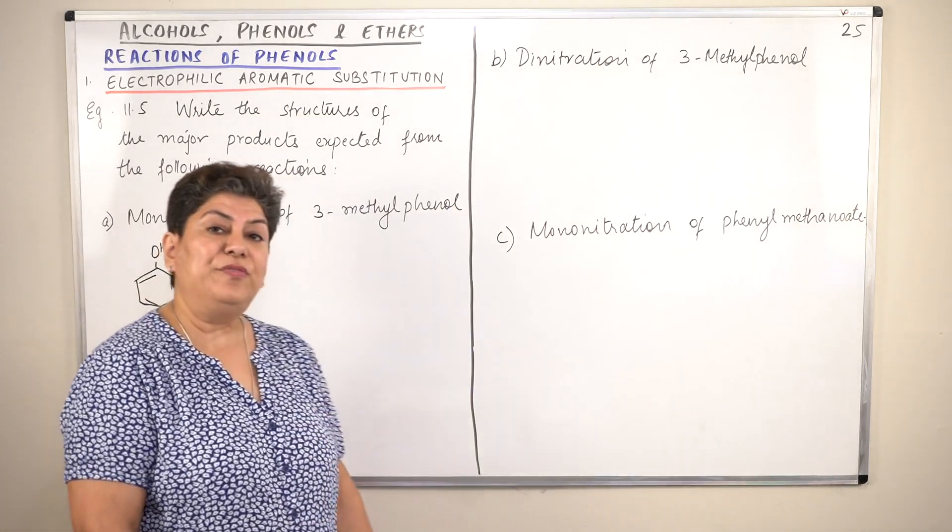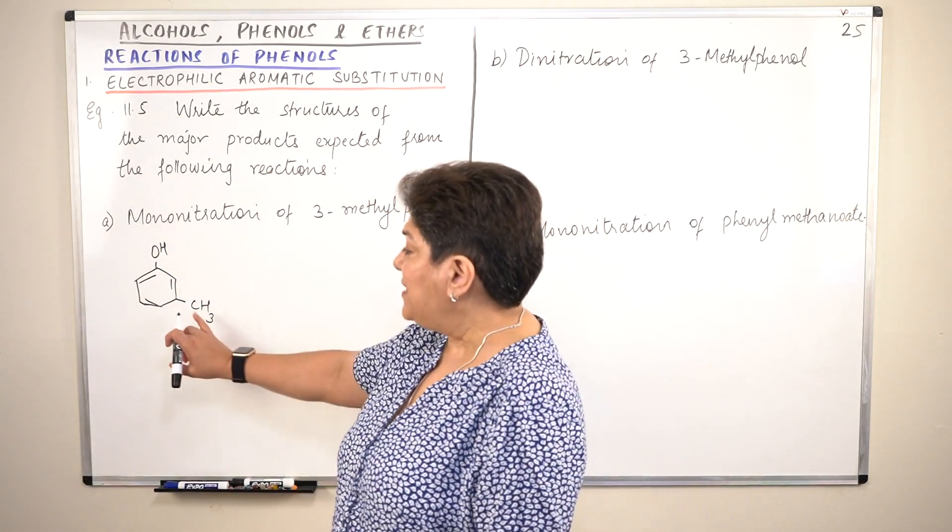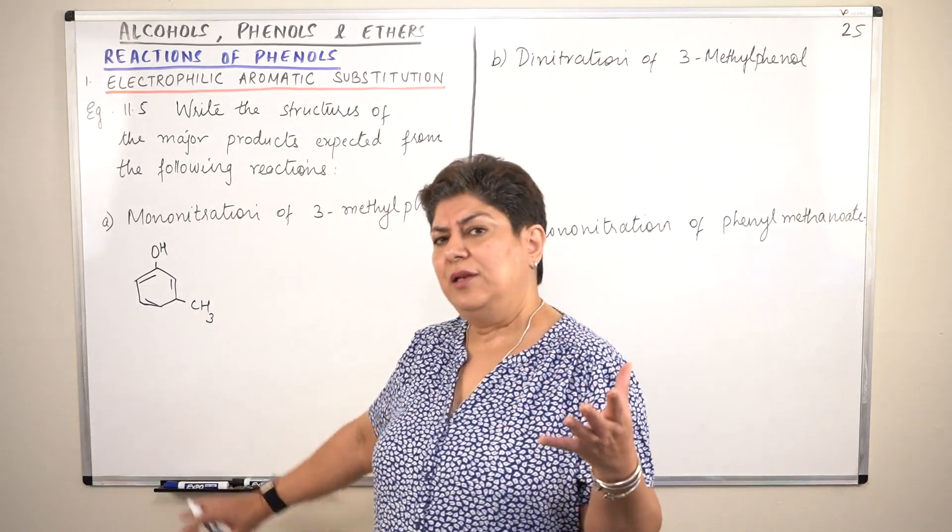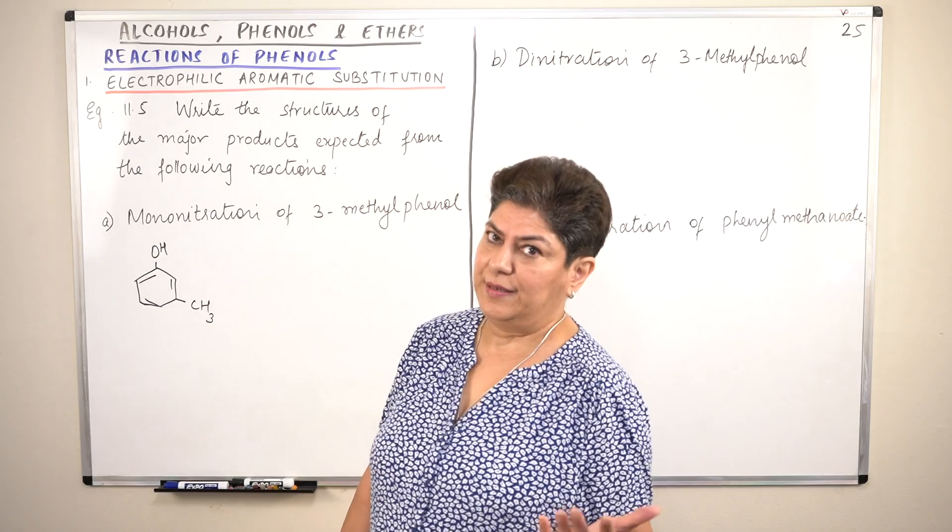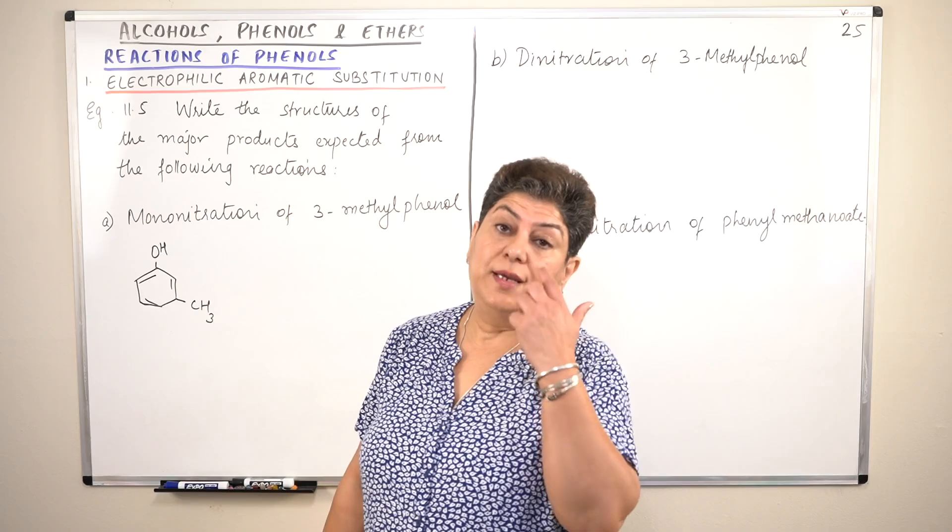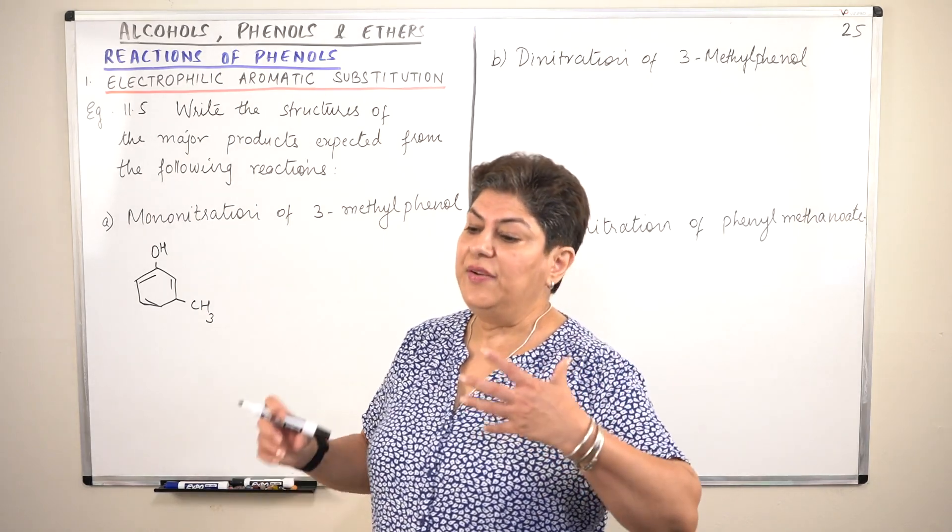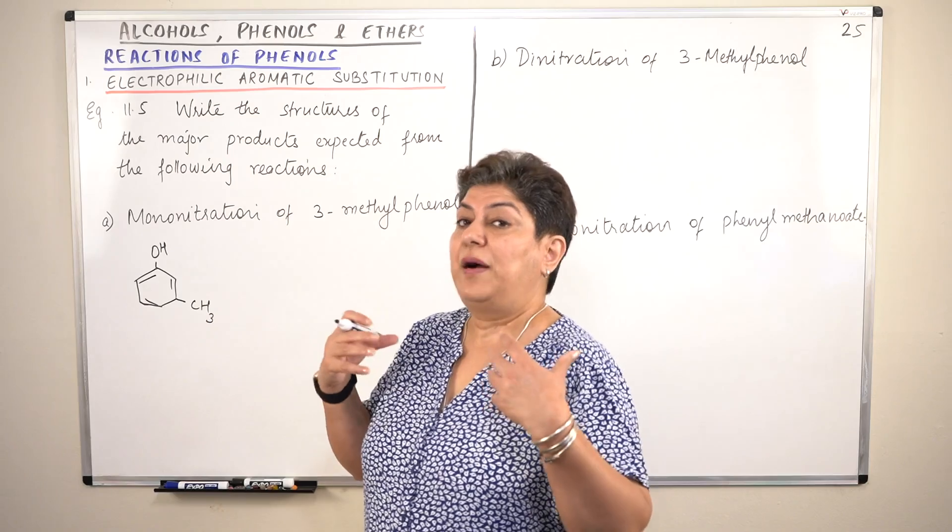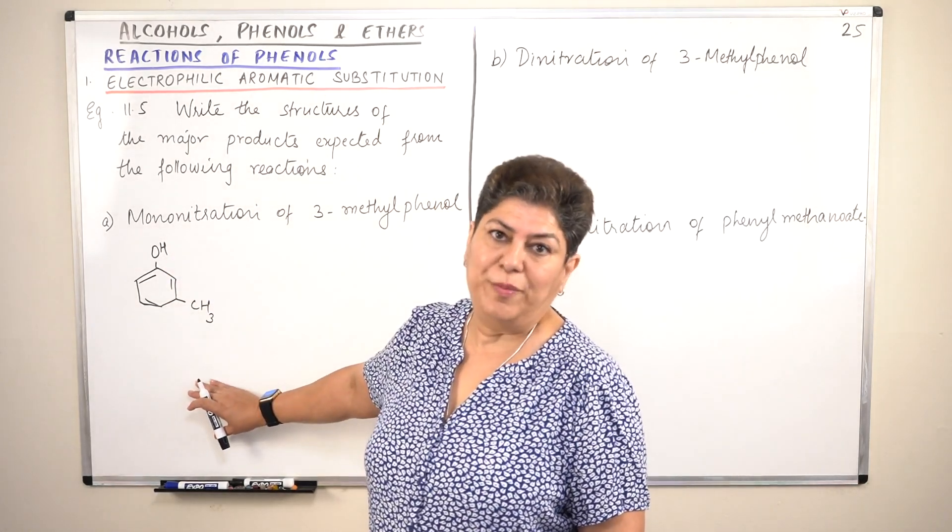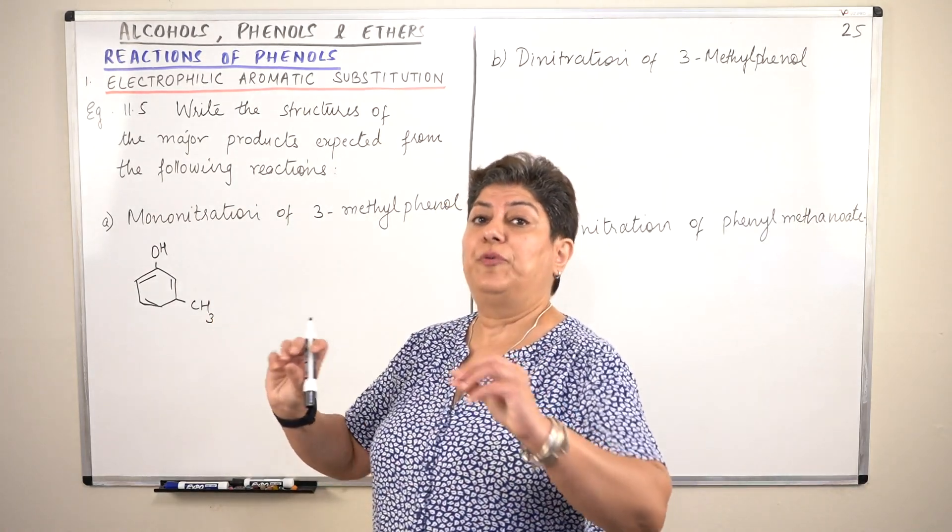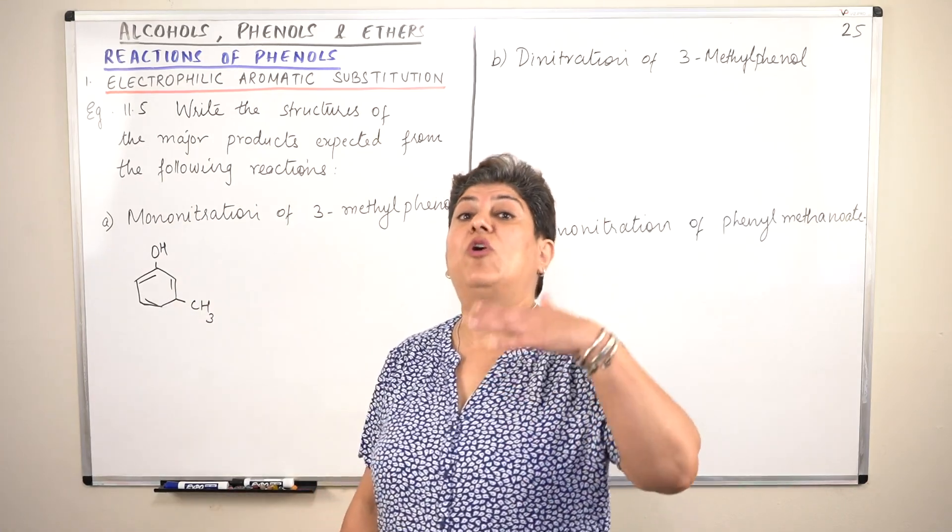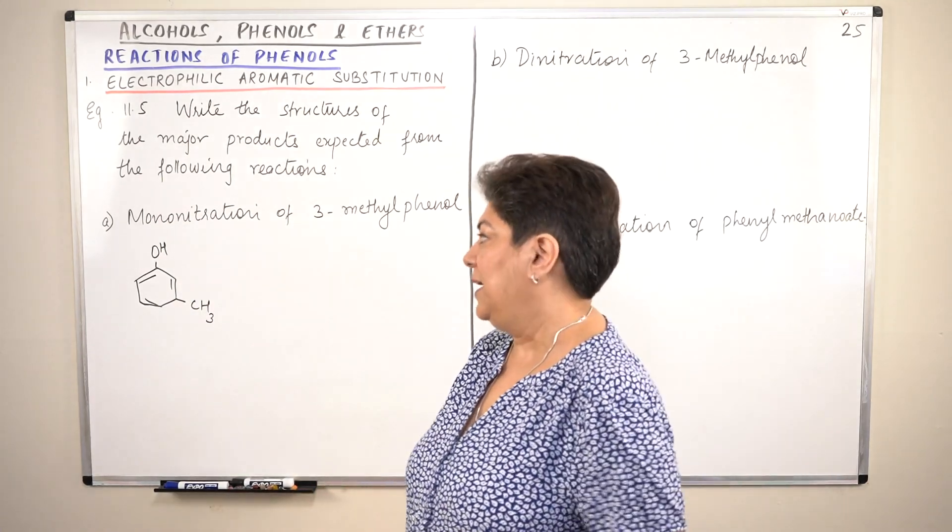So we know that the phenolic group is ortho-para directing, but the presence of a methyl group on the third place - actually the methyl group is also ortho-para directing, but a methyl group is a substituent while the OH group is a functional group. So in a reaction, the participation or the effect of the OH group will be more than that of the methyl group, but the presence of the CH3 group will also affect the products. Let us see how.